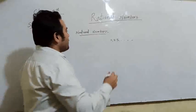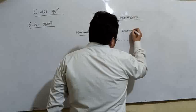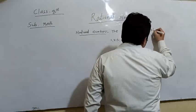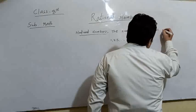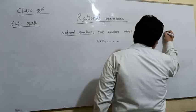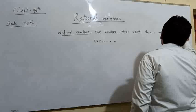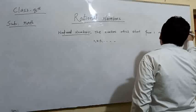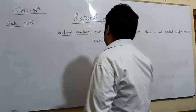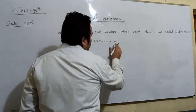And with the definition, we can write that the numbers which start from 1 are called natural numbers. Here are some examples: 1, 2, 3, and so on.